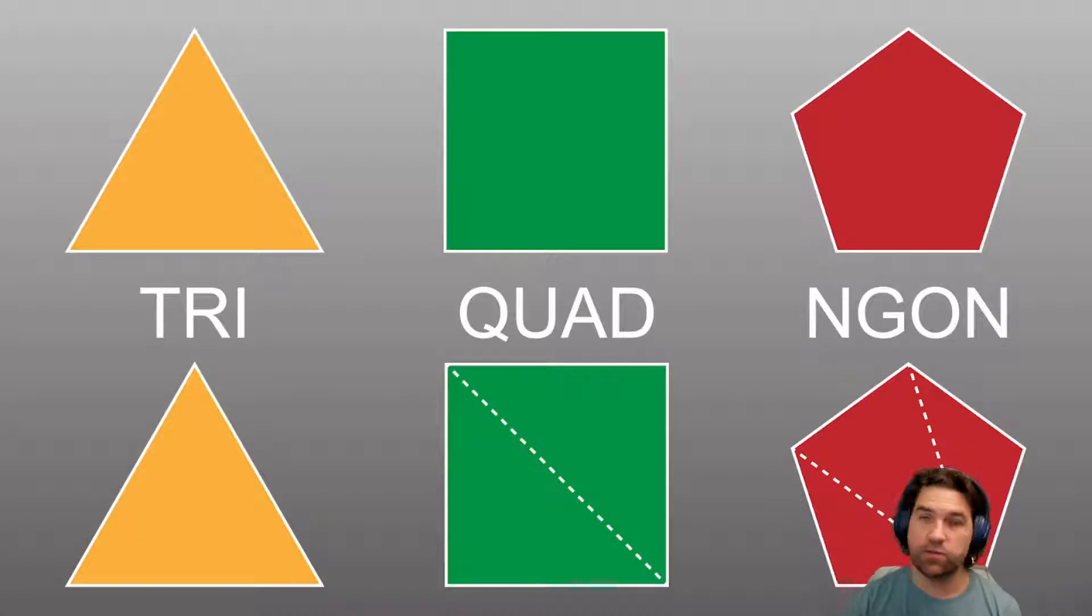You might have heard, well, all things are going to get triangulated anyway. Everything that gets rendered on the screen has to get turned into all triangles. The reason we like quads is because they have an even number of sides, and they always turn into two triangles. The problem with an N-gon is what configuration of triangles can it connect together?